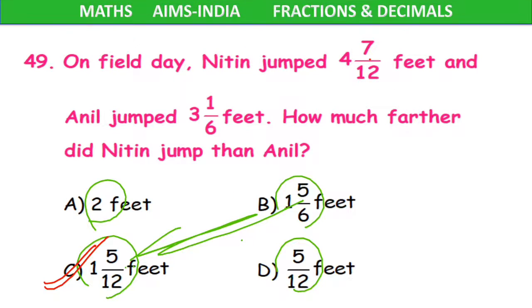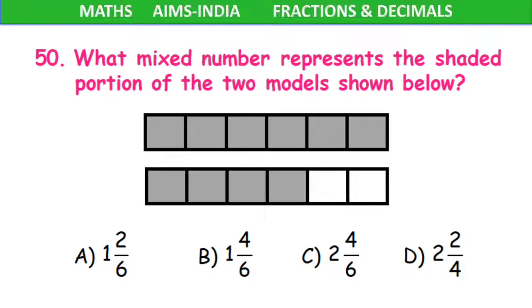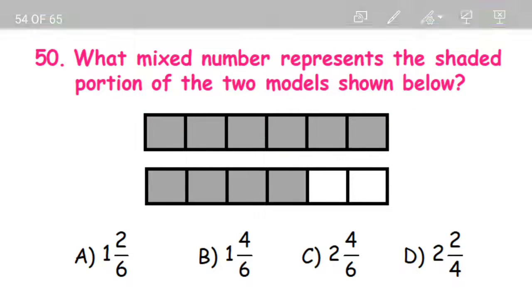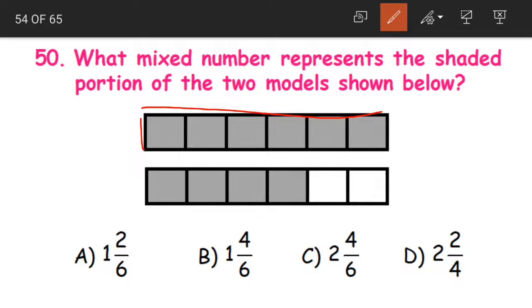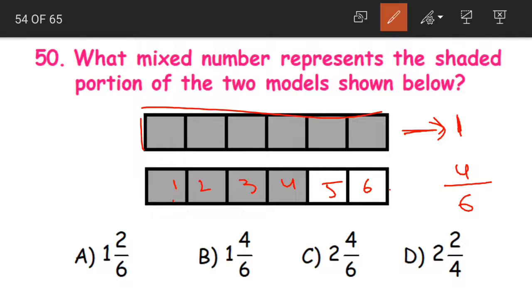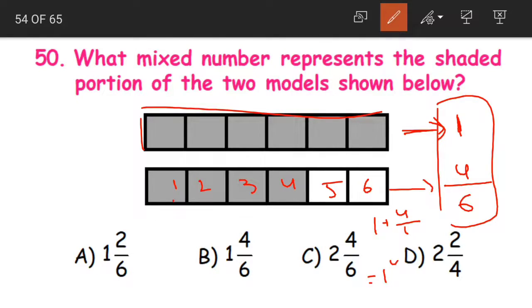So 1 and 5/12 feet is our answer — that is option C. Next question 50. What mixed number represents the shaded portion of the two models shown below? We are having two models. If you look at the first model, it is fully shaded — so the number that represents the first model is 1. Coming to the second model, 1, 2, 3, 4 blocks are shaded out of 6, so it becomes 4/6. Model 1 is represented by 1 and model 2 by 4/6. Combined, it becomes 1 and 4/6, that is option B.